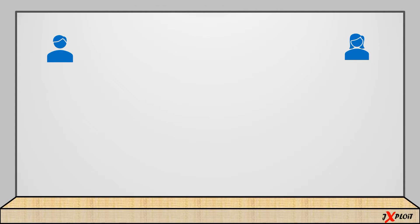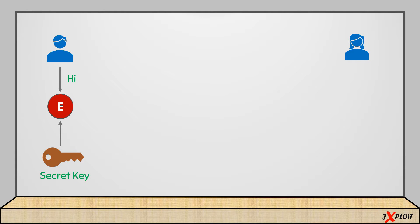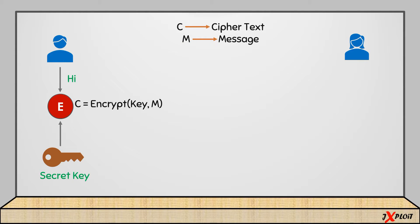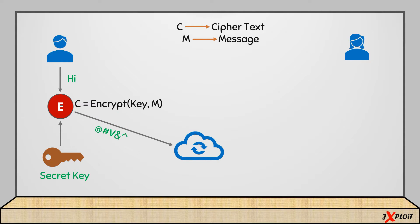Now let's see how symmetric key cryptography works with an example. John wants to send a message to Sarah — the message is simply 'hi'. Assuming the messaging app uses symmetric key cryptography, the message is first sent for the encryption process. The encryption algorithm is applied with the help of the secret key, converting the plain text 'hi' into ciphertext — the encrypted message.